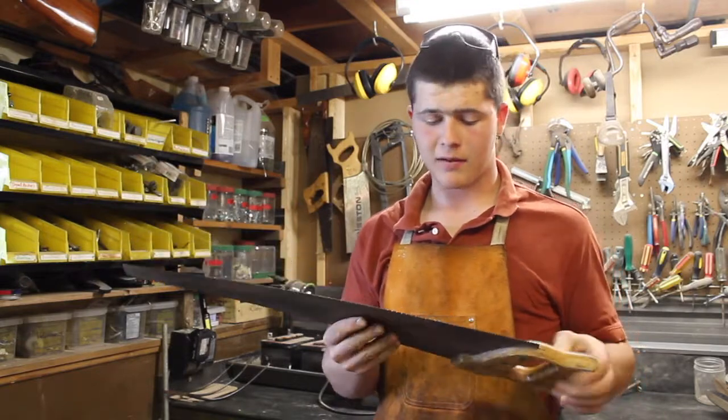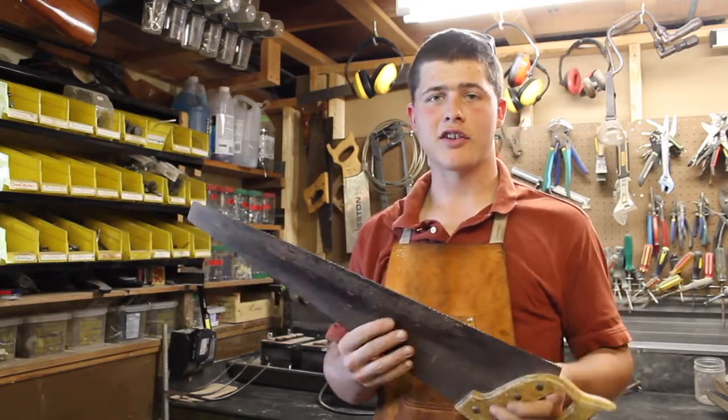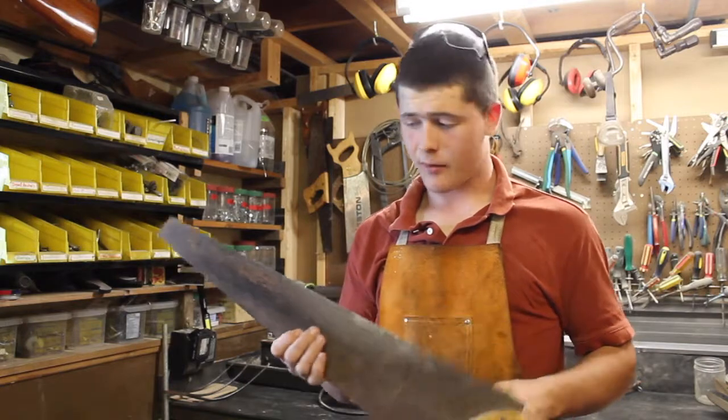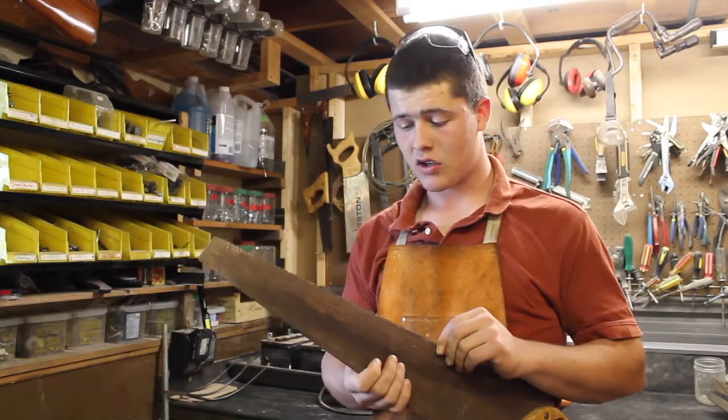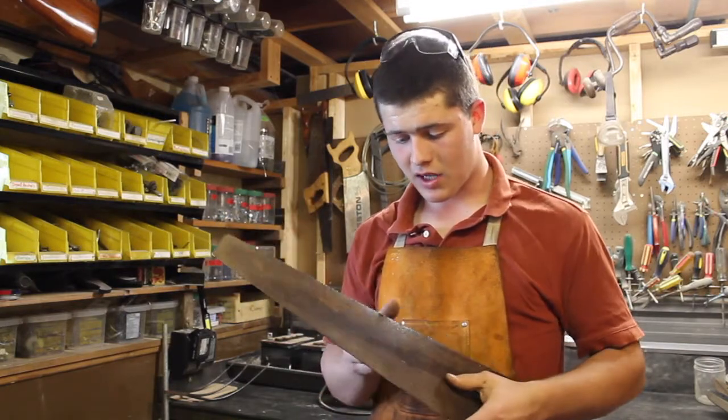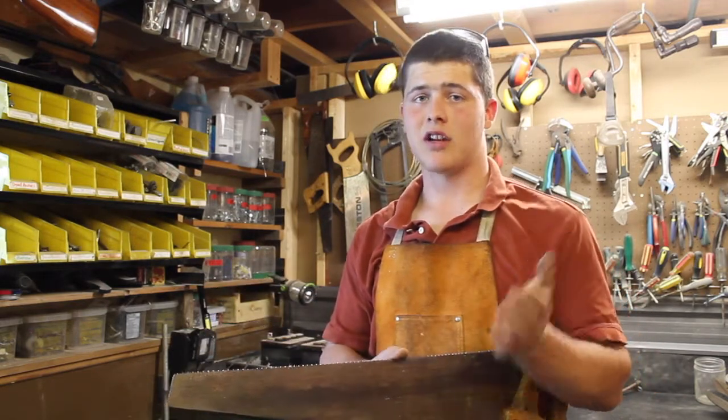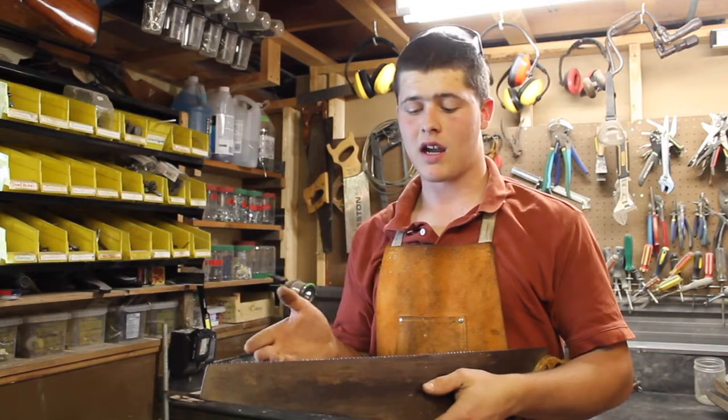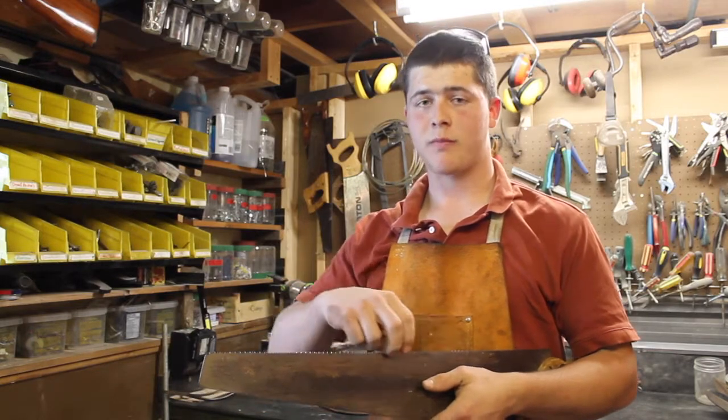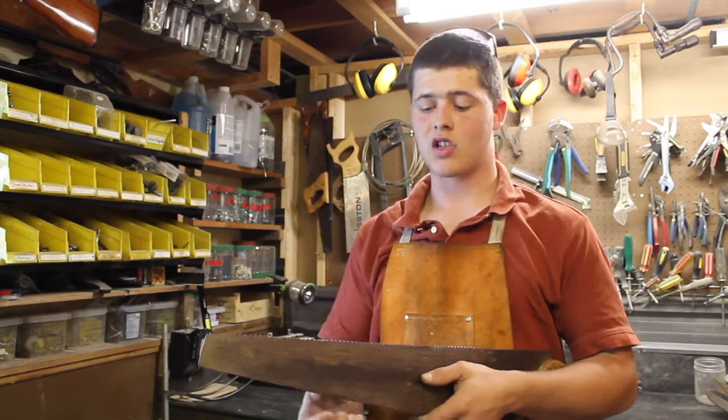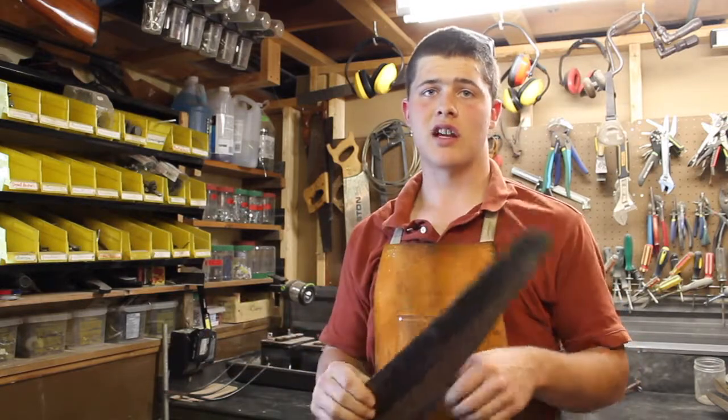There's one more thing you need to check before you go try it out on your new project—it's called set. I'm sure there's some fancy ways of measuring it, but basically you need all the teeth on the left side to be leaning left and all the teeth on the right side to be leaning right, so that it cuts a wider path of wood away than the saw takes up. That way it's not always getting bound up while you're trying to saw.